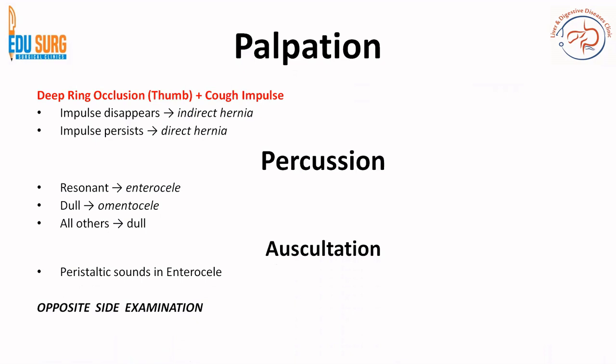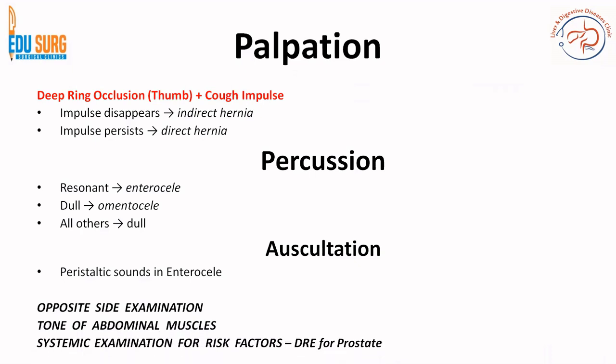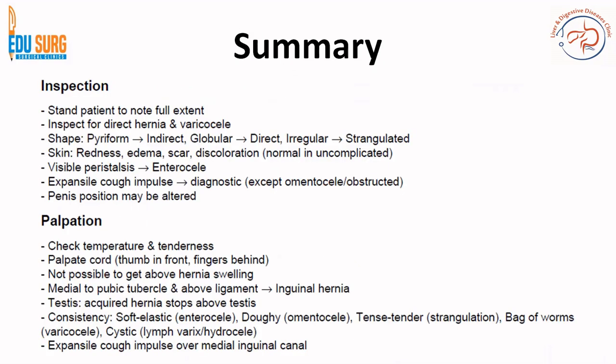Always remember that after examining the swelling, you have to check all the hernia orifices, the opposite side, and the back. Look for tone of abdominal muscles and the Malgaigne's bulge using head-lifting and straight leg raising tests. Examine the opposite side. Perform a per rectal examination because benign prostatic hypertrophy is a risk factor for hernia. Examine the respiratory and cardiac systems. A full body examination with special focus on risk factors for hernia should be done for all patients.